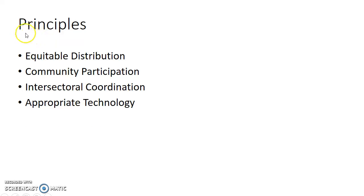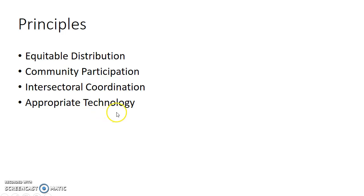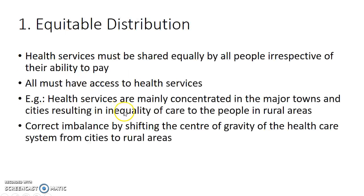Now let us see about the principles of primary health care. There are four principles: equitable distribution, community participation, intersectoral coordination, and appropriate technology. Now let us see about each principle in detail.